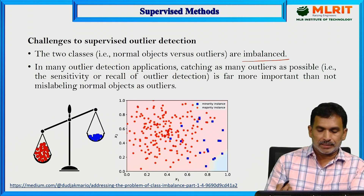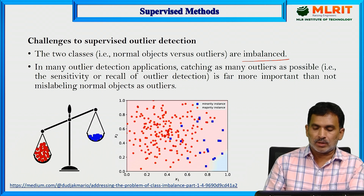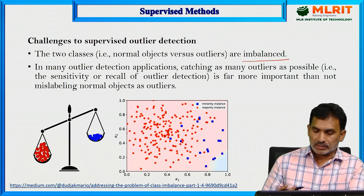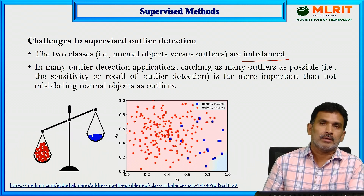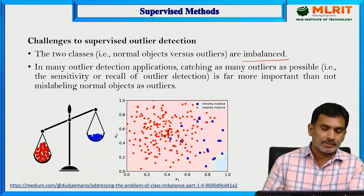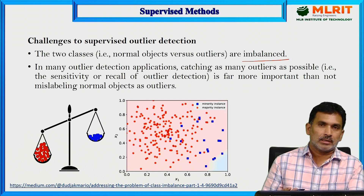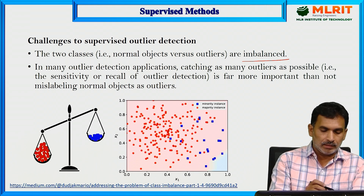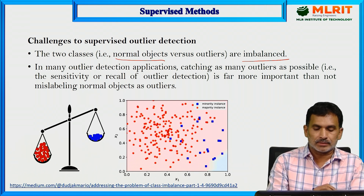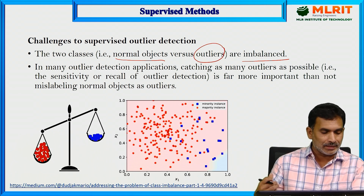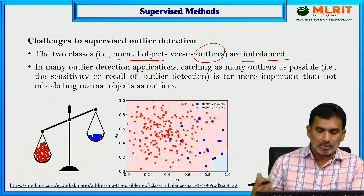The main challenge to supervised outlier detection is class imbalance. When there are two classes — normal objects versus outliers — the data is imbalanced. In most outlier applications, we get many normal objects but very few outlier objects, which creates a huge class imbalance. To train the model to perform well in identifying outliers, enough samples need to be supplied.